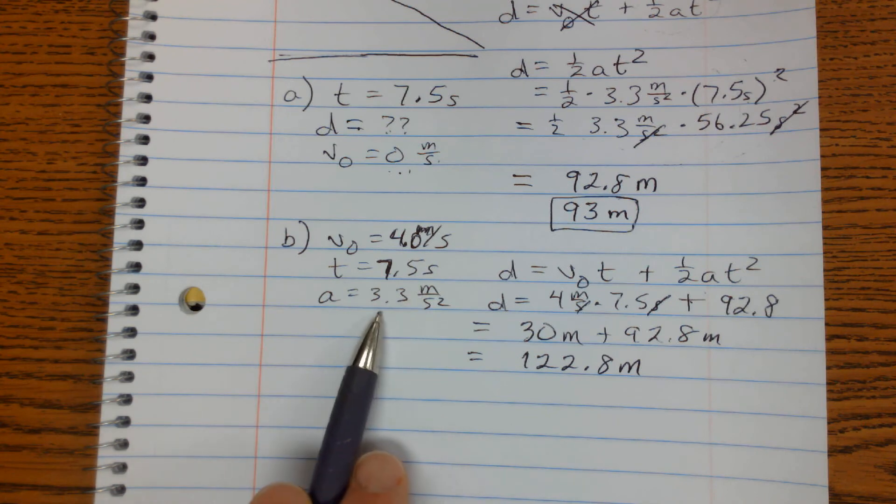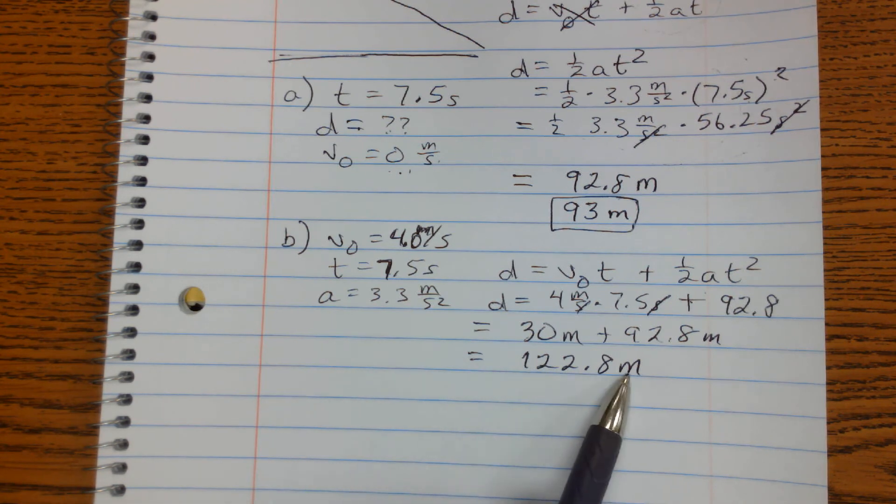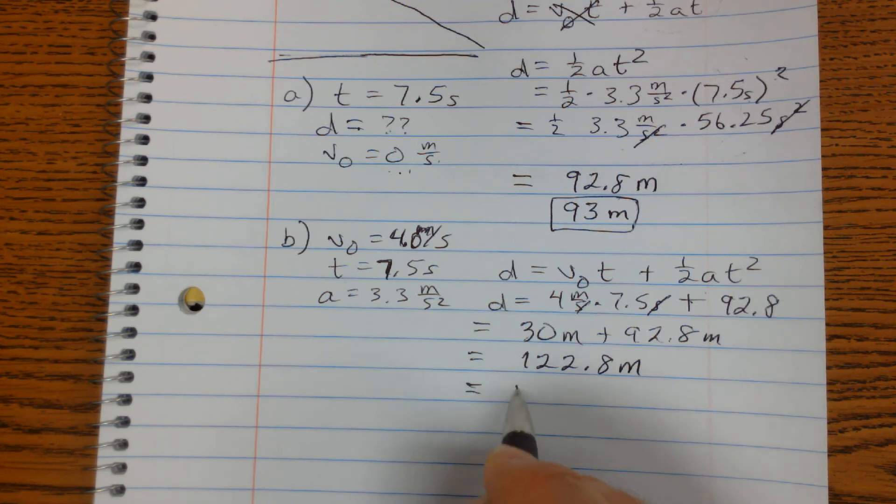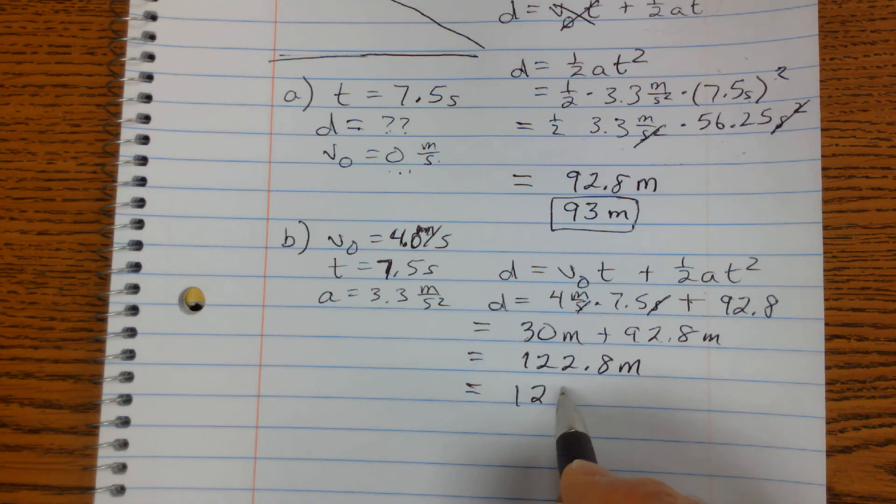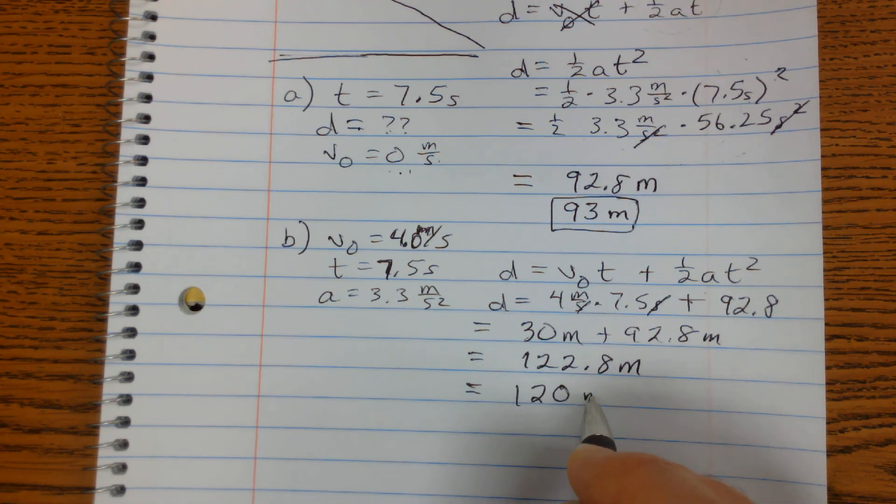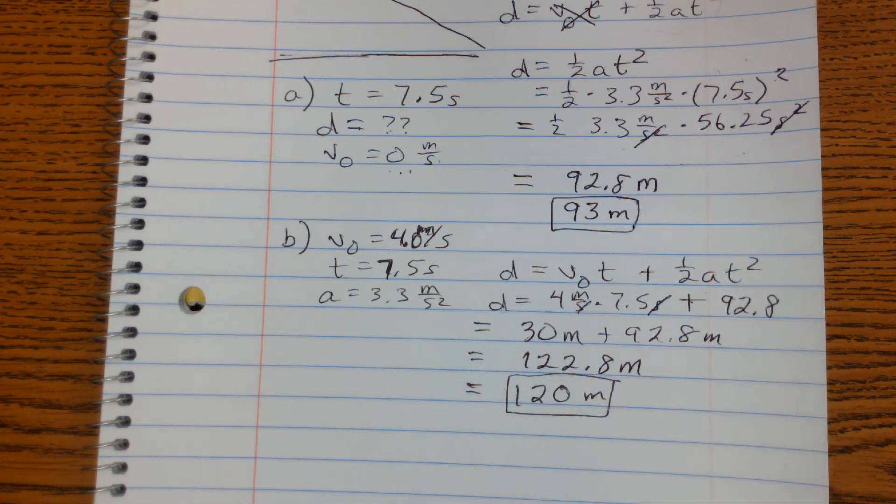If you had that, that would be fine. But if we're going to follow significant digits rules, this has 2, this has 2, this has 2. Our final answer can only have 2. So we keep these 2 to the left. 1, 2. That 2 didn't round that up. So we just get 120 meters if you're doing significant digits.